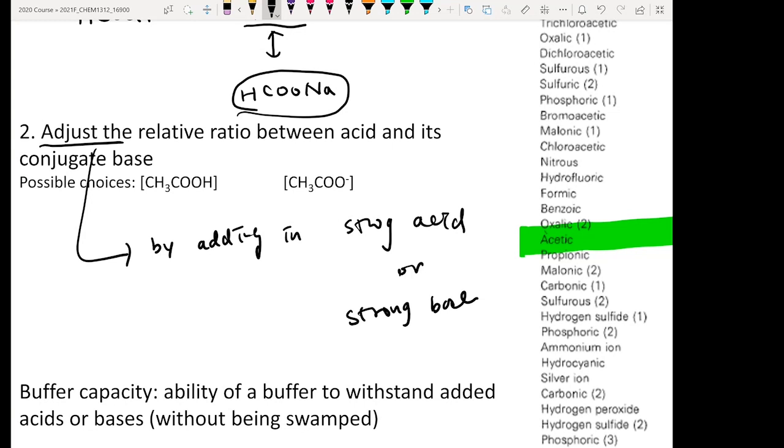So when you prepare the buffer solution in the laboratory, you check out the pKa table. You identify what species you want to use. You dissolve substantial amounts into your water. Then you finalize the pH by adding in strong acid or strong base.